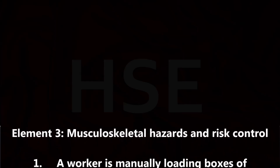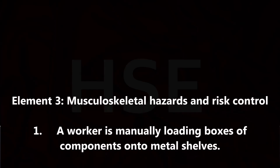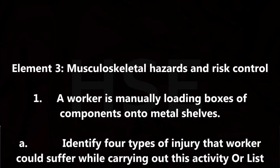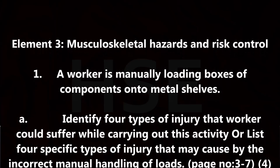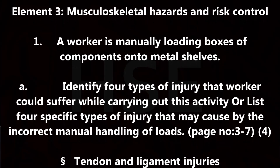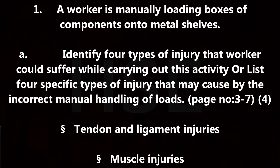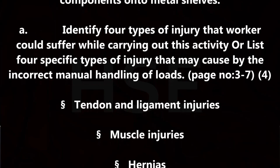Element 3: Musculoskeletal Hazards and Risk Control. Question 1: A worker is manually loading boxes of components onto a metal shelf. Identify 4 types of injury that the worker could suffer while carrying out this activity, or list 4 specific types of injury that may be caused by the incorrect manual handling of loads.